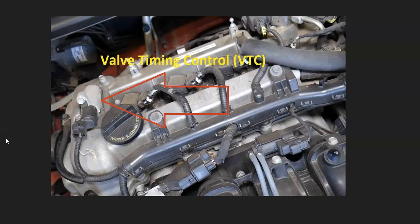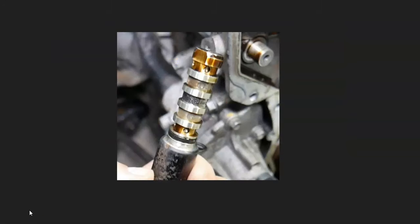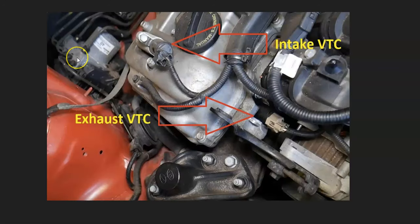There's going to be a few components to check out when you get this code. One of the first things to check out is what's called a valve timing control. These are just small solenoids that oil flows through, and they can adjust the timing when needed. There's two of them: an intake valve timing control and an exhaust valve timing control.